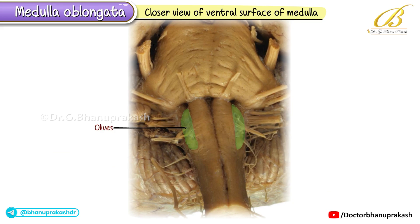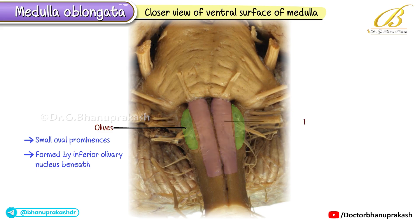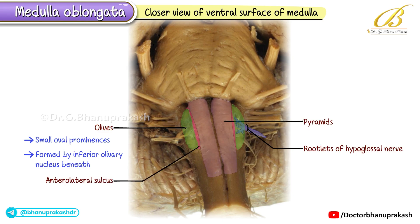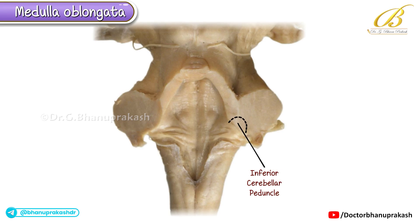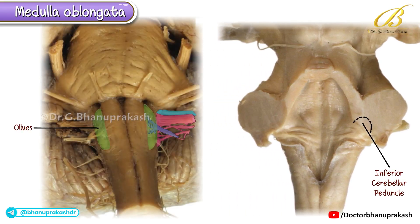The olives are found in the upper one-third of the medulla — small oval prominences formed by the inferior olivary nucleus beneath. They're separated from the pyramids by the anterolateral sulcus, where the rootlets of the hypoglossal nerve attach. The inferior cerebellar peduncles, lateral to the olives, connect the medulla to the cerebellum. The posterolateral sulcus between the olive and inferior cerebellar peduncle is where cranial nerves 9, 10, and 11 emerge.